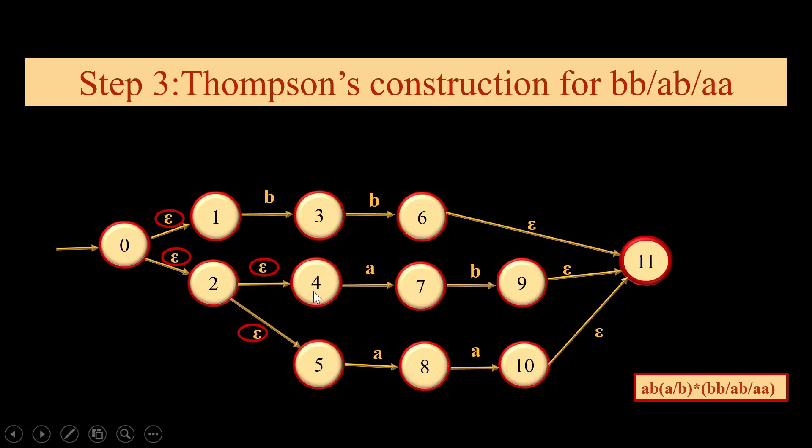And here we will have ab and aa. So this is how we will go for Thompson's construction when we have three or more inputs of a regular expression in an or condition.